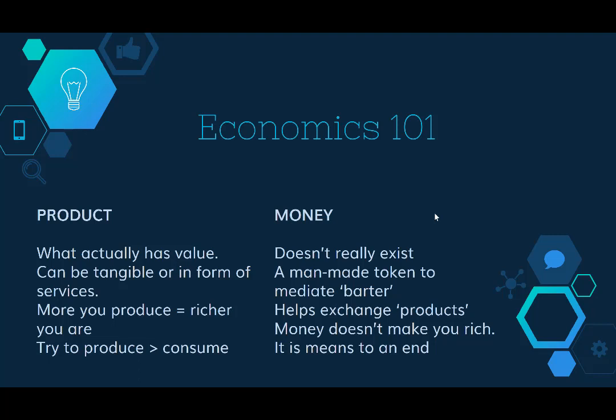One key thing to understand is that what actually has value is called a product. A product can be tangible, like a mobile phone, or it can be a service — like teaching people. The more you produce, the richer you are. Money doesn't really exist in an intrinsic sense; money is basically a man-made token to help us barter, so we can exchange the products we make for products that somebody else makes.